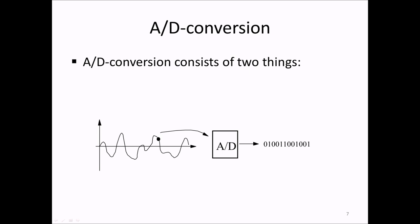In the analog-to-digital conversion stage, the analog signal is converted to a digital signal, that is, a discrete signal, represented by binary numbers, as indicated here. The analog-to-digital conversion consists of two things.